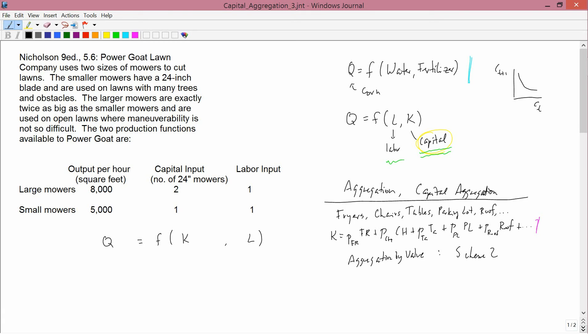And what we said in the previous slide is that Scheme 2 had bad properties. Scheme 1 had some bad properties, but it wasn't as bad. Scheme 1 was aggregation by weight. But as I said, nobody would think of adding up the weight of the asphalt and the weight of the roof and coming up with a weight of capital, and it wouldn't be a good thing to do.